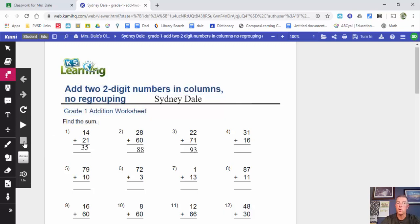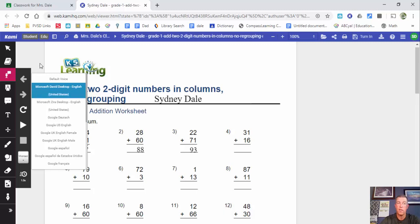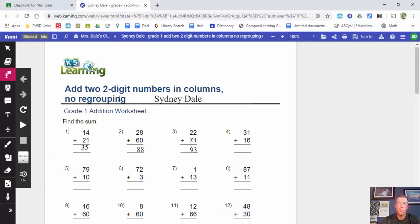Let's just say you want to have the whole "two digit numbers in columns, no regrouping" read. It can go through and do that. You can change the voice here if you'd like to as well. Also, if there's only a few words that you would like to have read, you could just highlight those words and it would read it for you.